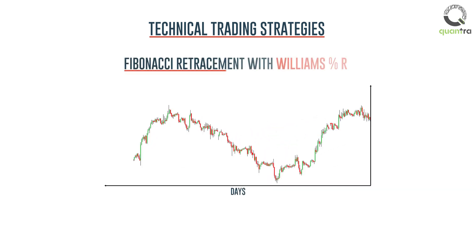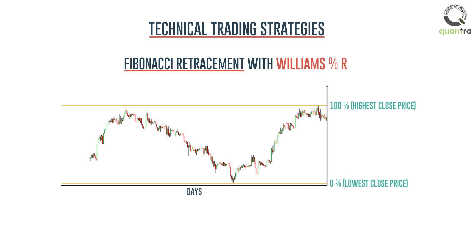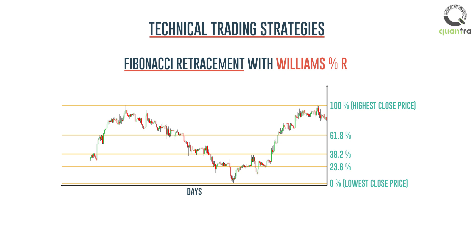Consider this candlestick chart, where we will plot the Fibonacci ratio lines, with 0% being the lowest close price of a trend and 100% being the highest close price of the trend. We will divide the area between the 0% and 100% lines into the Fibonacci ratios of 23.6%, 38.2%, and 61.8%.